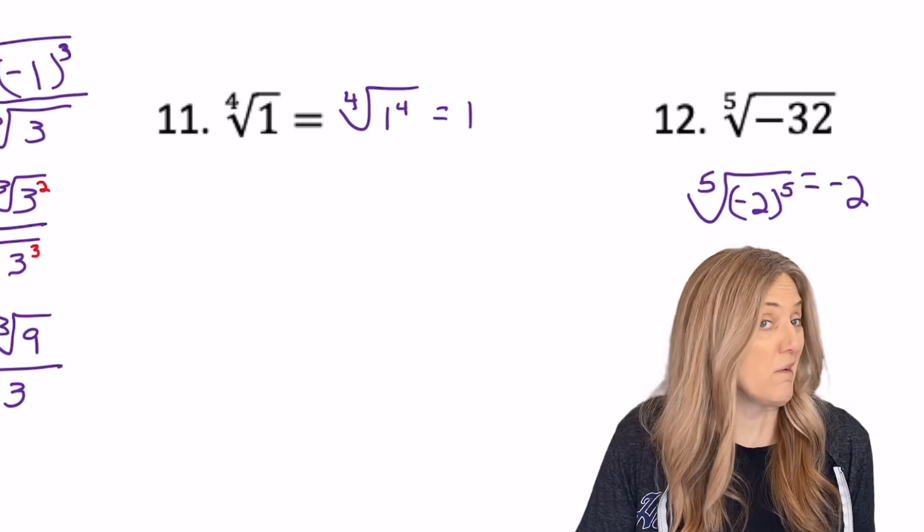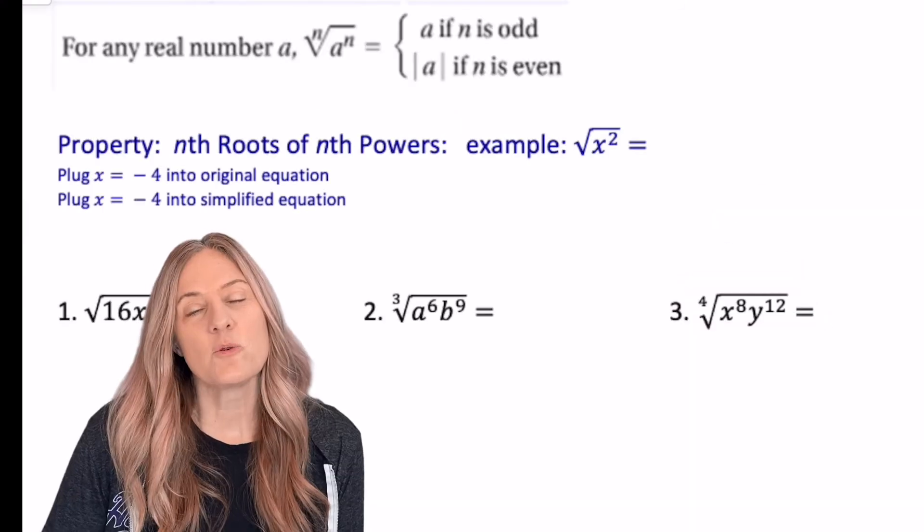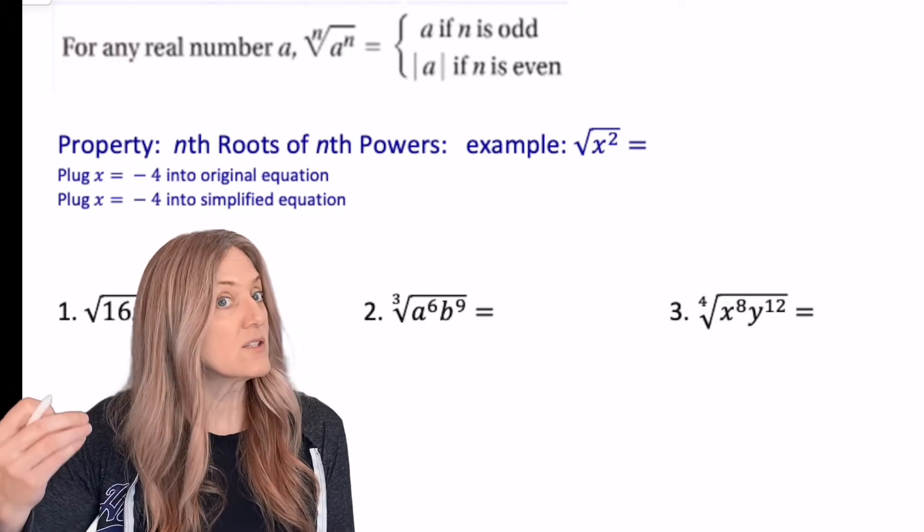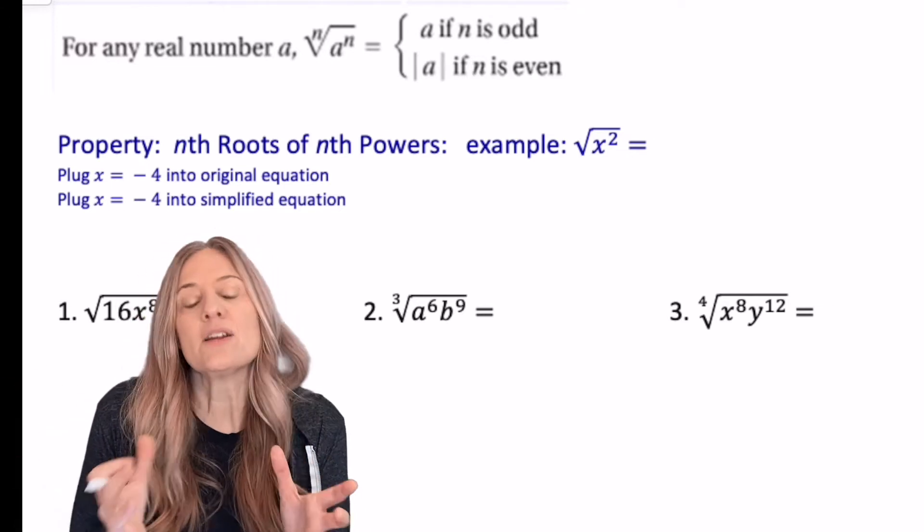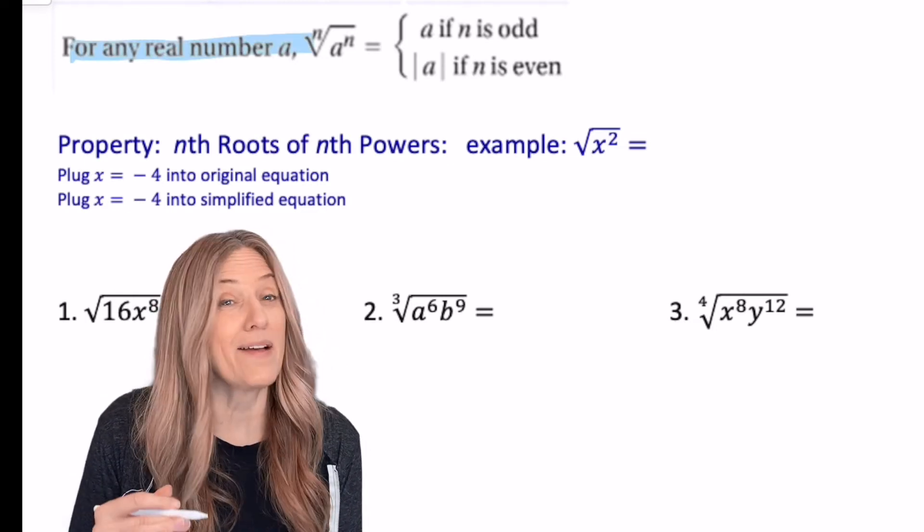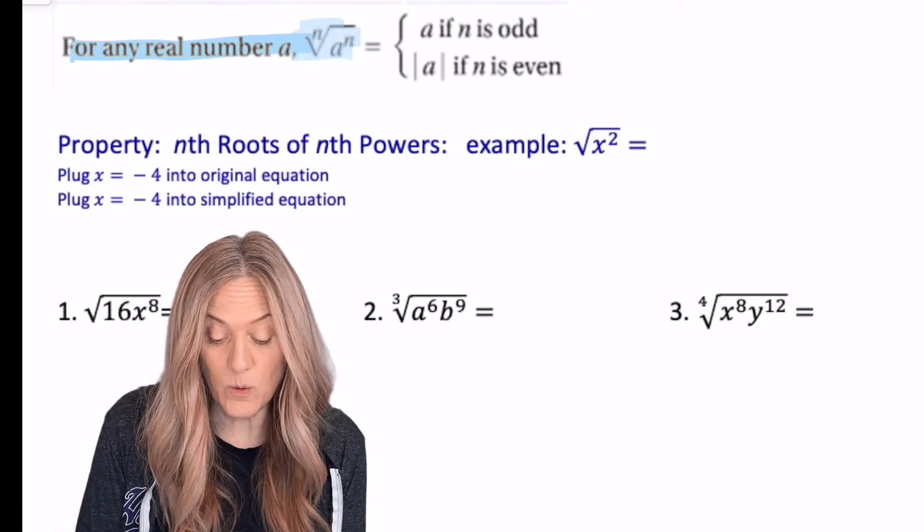Number 11, one, number 12, negative 2. So we saw that any time we have the nth root of something raised to the nth power, that they kind of undo each other. So we see for any real number a, the nth root of a to the n will equal, ooh, wait a second,